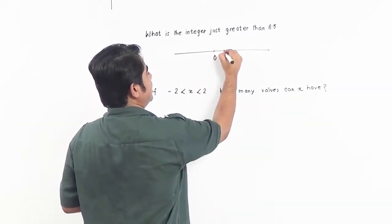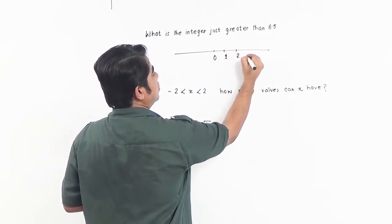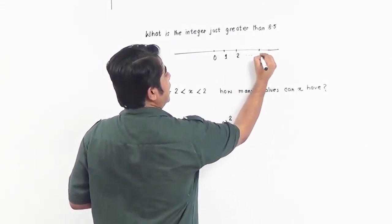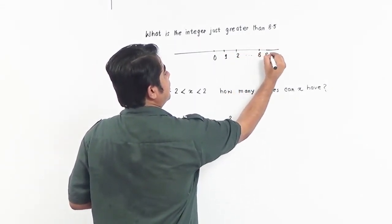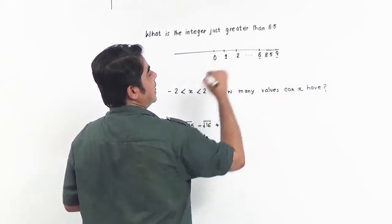The first one is: what is the integer just greater than 8.5? Now if you draw the numbers on the number line, 8.5 is between 8 and 9.